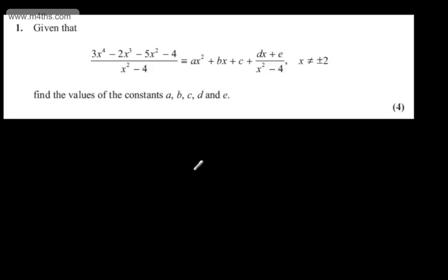This is question number one and it carries four marks. Given that 3x to the fourth minus 2x cubed minus 5x squared minus 4, over x squared minus 4, is equal to ax squared plus bx plus c plus dx plus e over x squared minus 4, where x cannot be equal to plus or minus 2, find the values of the constants a, b, c, d and e. There are a few different approaches with this one.